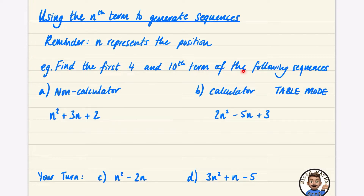I'm going to do a non-calculator method for this first one. I want to find the first four terms. The first term is when n is equal to one, so I'm going to substitute one into the expression: one squared plus three times one plus two, which is one plus three plus two — that's six.